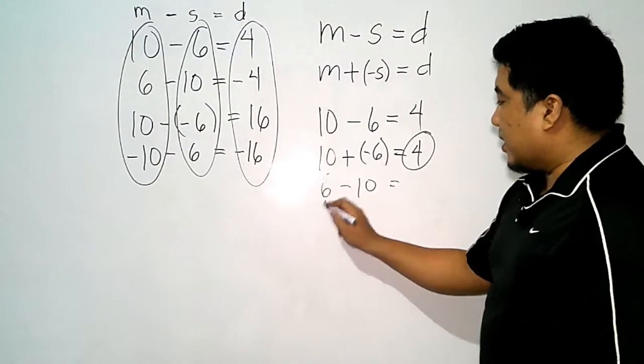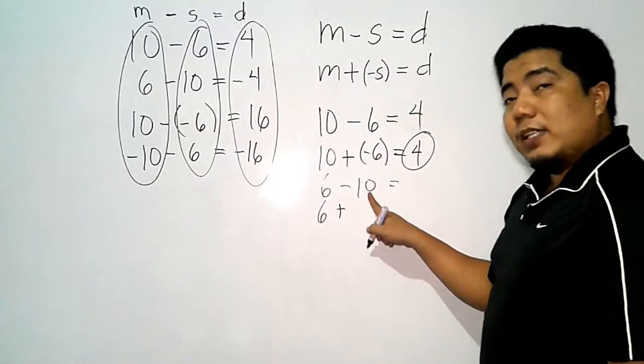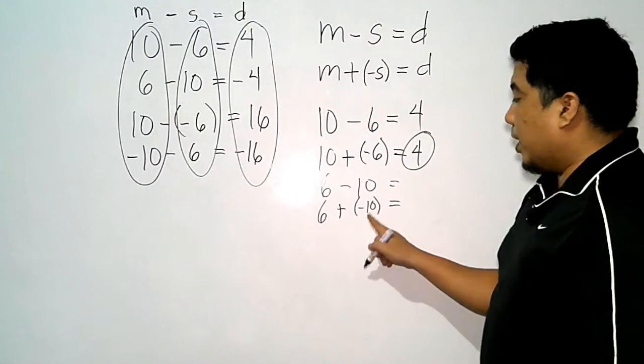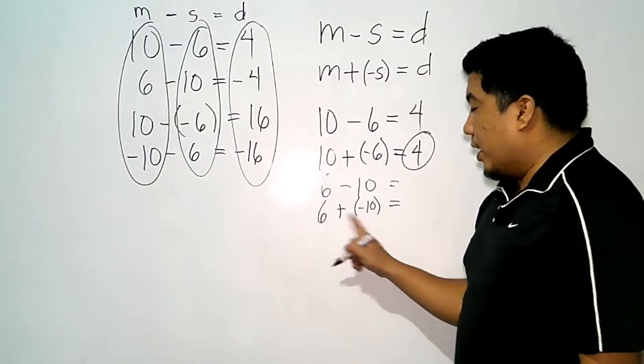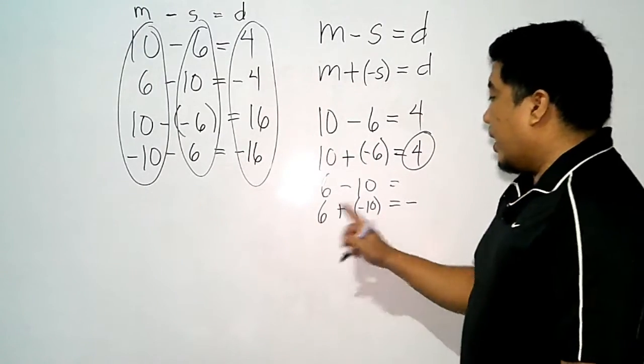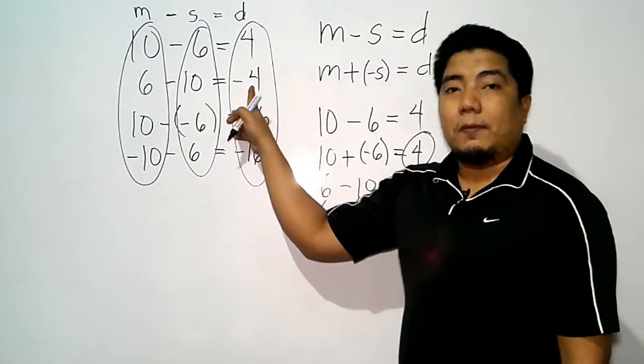That gives us 6, do not change the minuend. Then the minus will become plus. This positive 10 will become negative 10. So we have here bigger negative. They are unlike sign. So we copy the negative. Then we subtract the values 10 and 6, and that is negative 4, which is just the same as this one.